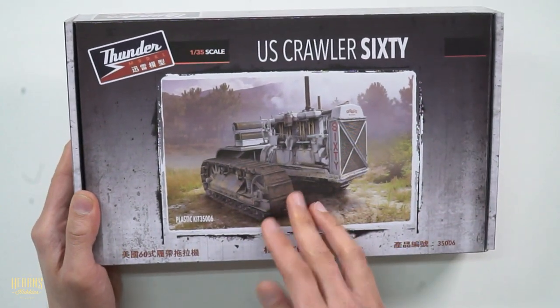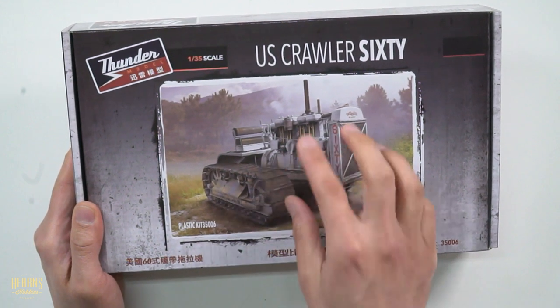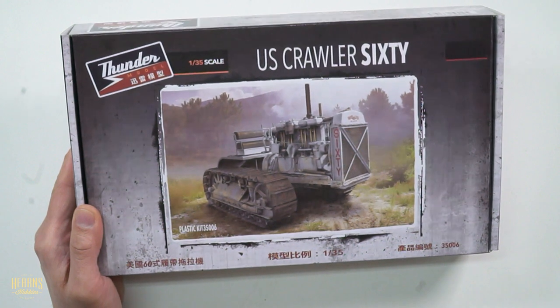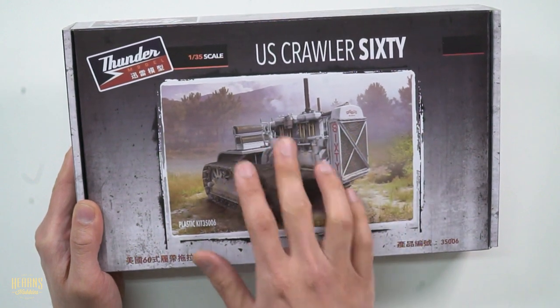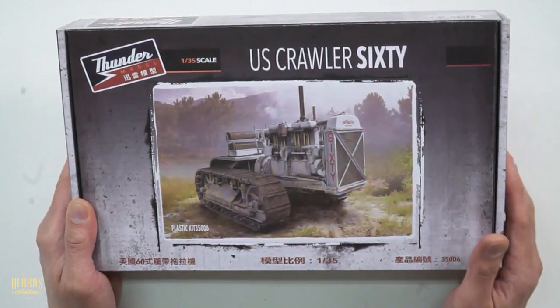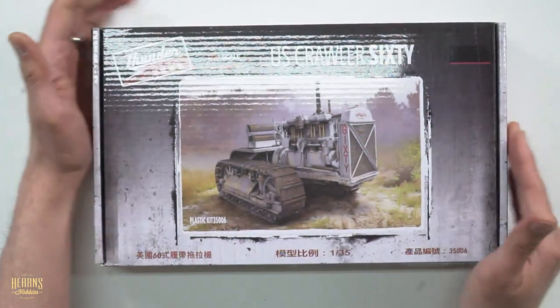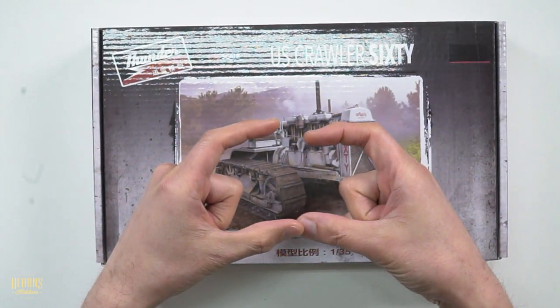Looking at the box art, you can see pretty much a tractor is an engine on a chassis with some caterpillar tracks. But there's so much going on here because it's basically an exposed engine that actually has a lot of bits inside. This is a much bigger box than you would expect for a tractor that's only going to be this big.